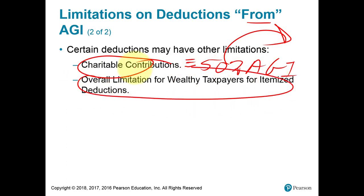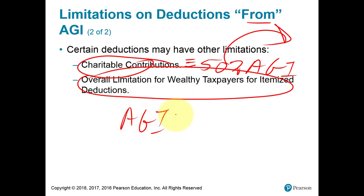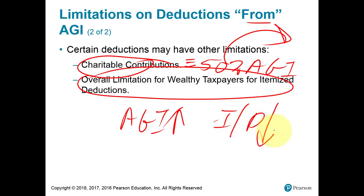This last one: if the total AGI income exceeds a certain limit, the total itemized deductions will start to decrease. Again, if AGI gets relatively large, the itemized deductions will start to shrink.